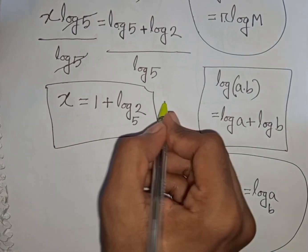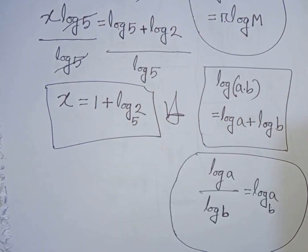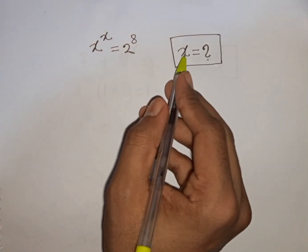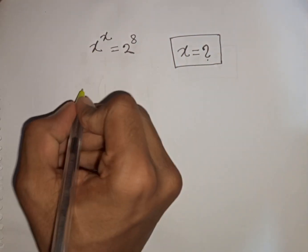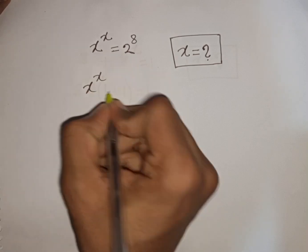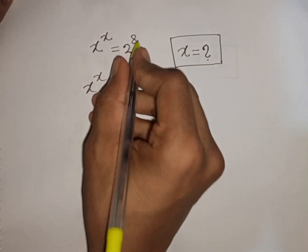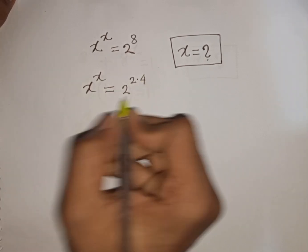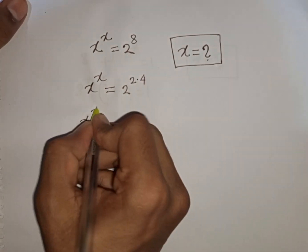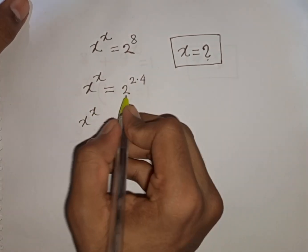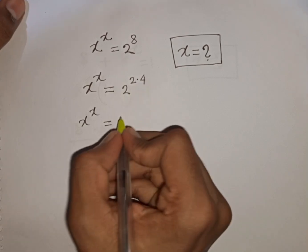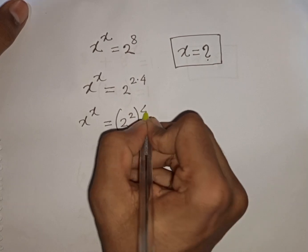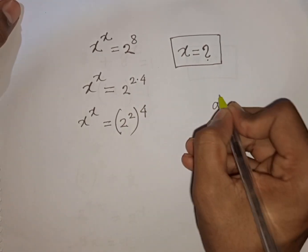This is our final answer for the first problem. Now the second problem: x power x is equal to 2 power 8 — find the value of x. So we have x power x is equal to 2 power 8, which can be written as 2 power of 2 times 4, which is the same as 2 power 2, bracket power of 4.